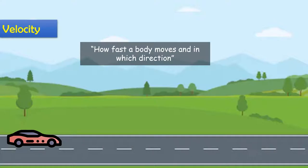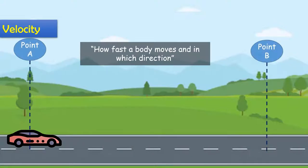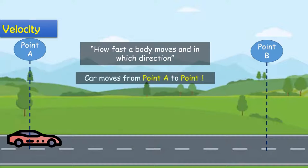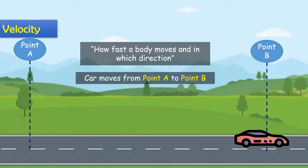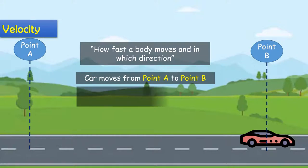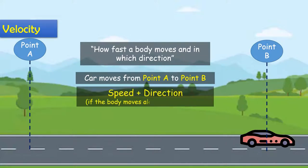If the body moves, we need to know in which direction and how fast. If the body moves in the east direction, west, north, or south — speed plus direction represents velocity. Speed with direction is velocity.